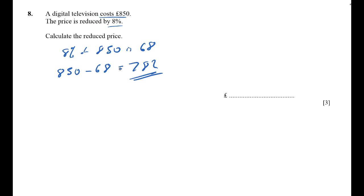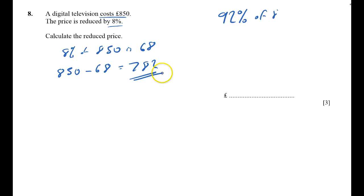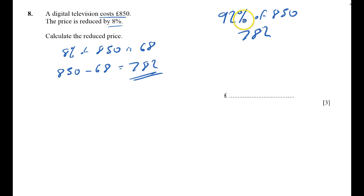Alternatively, if it's reduced by 8%, there'll only be 92% of it left. 92% of 850 is 782 — find 1% and then multiply by 92. Either way, you'll get the right answer: 782.